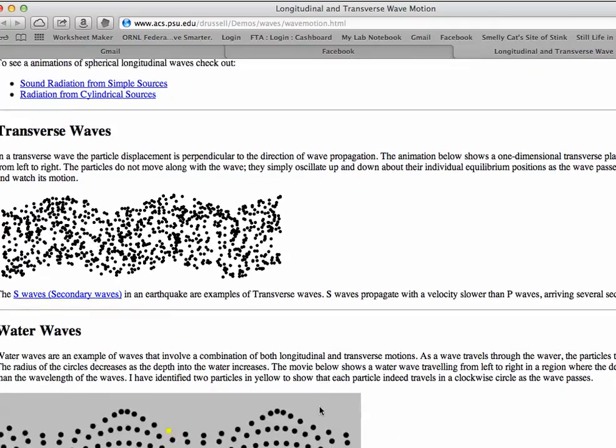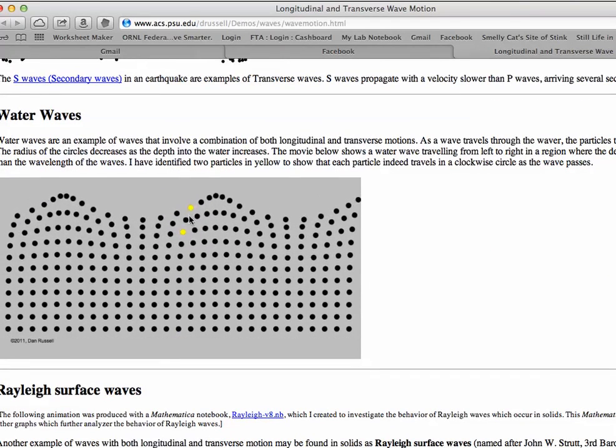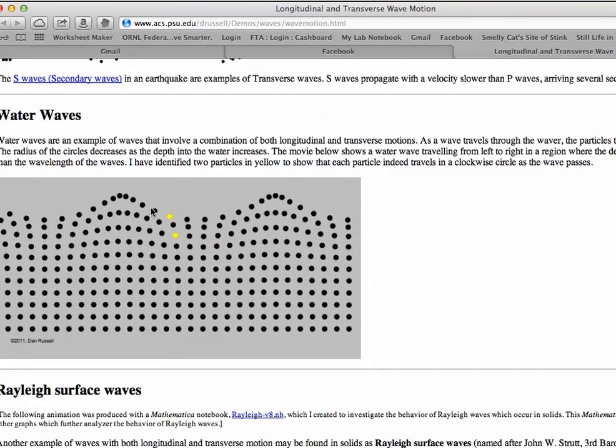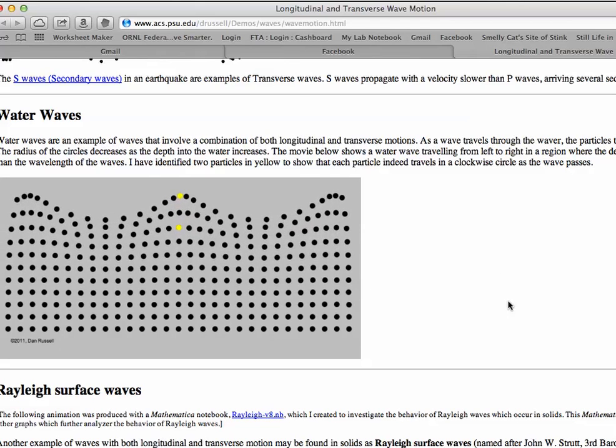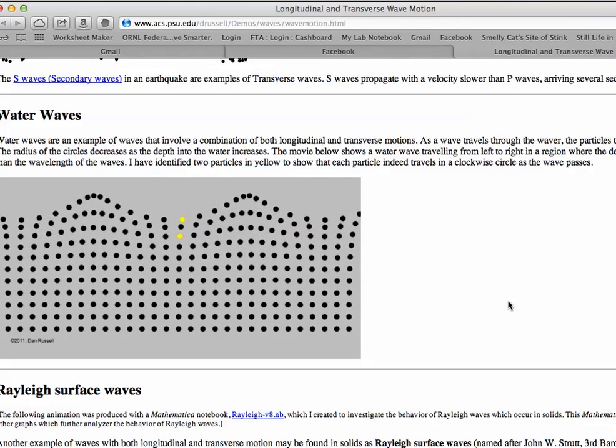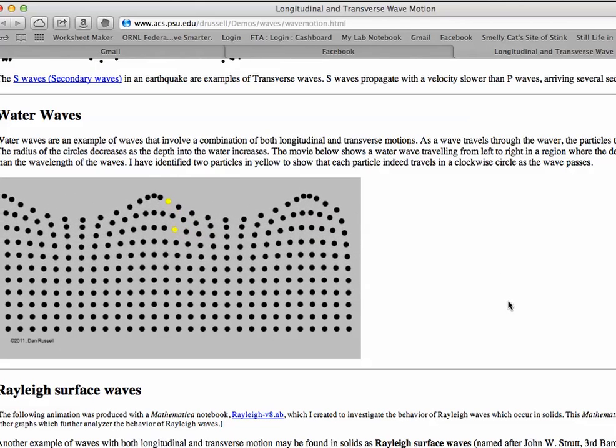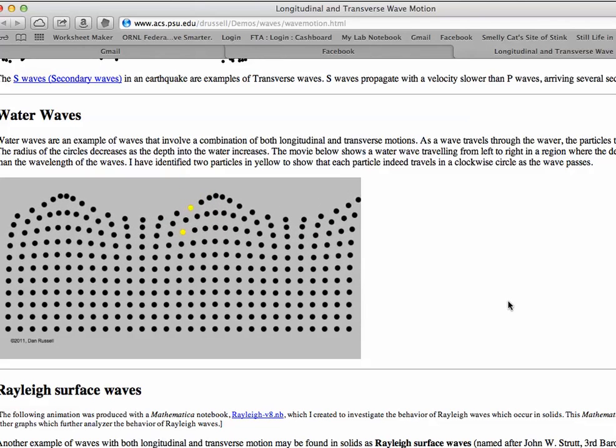And you can have surface waves. And if you watch these yellow particles, you can see it's going to move in a circular motion. So it has some up and down motion and some side to side motion, which is one of the reasons it has properties of both transverse and longitudinal waves.